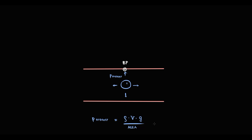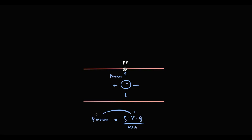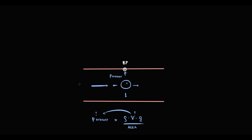Of these four factors, fluid volume is the most important. The bigger the volume of fluid inside the blood vessel, the bigger the hydrostatic pressure and thereby the higher the blood pressure. The factor that determines how much fluid enters the blood vessel is cardiac output — the volume of blood the heart pumps per minute. Cardiac output equals heart rate times stroke volume.